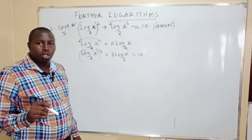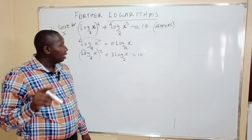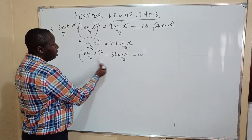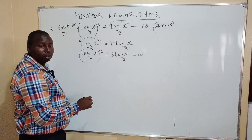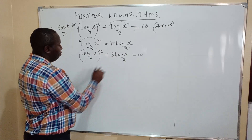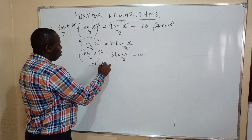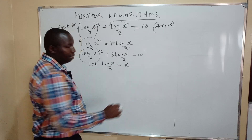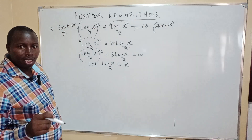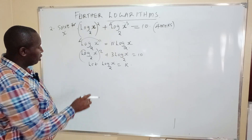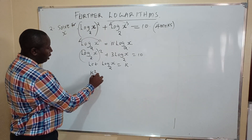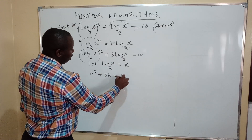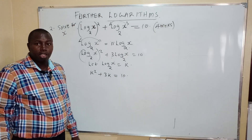Now, log x to base 2 is common in both terms. So write log of x to base 2 and give it a letter, like k. The equation then becomes: k squared plus 3k equals 10.